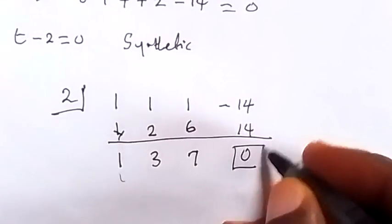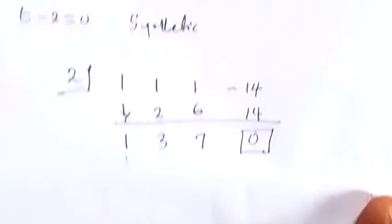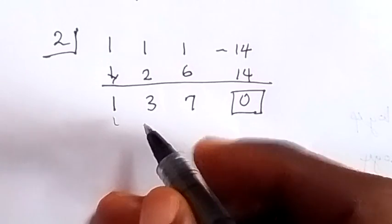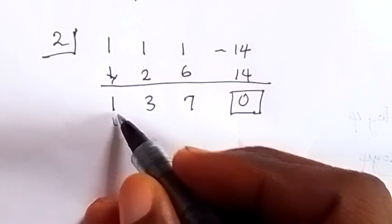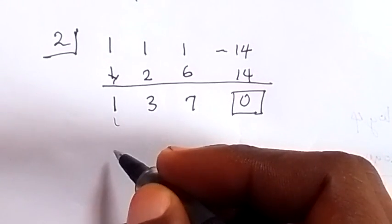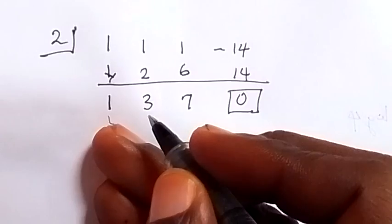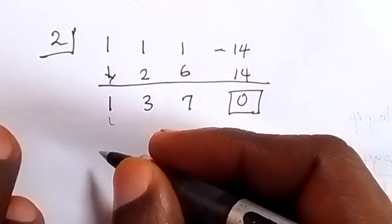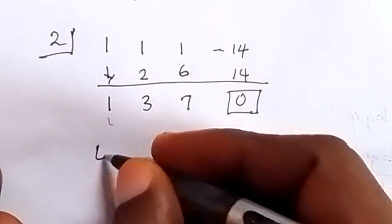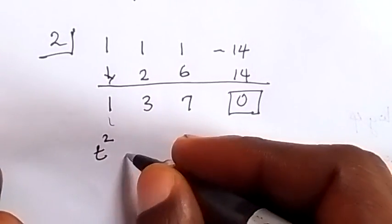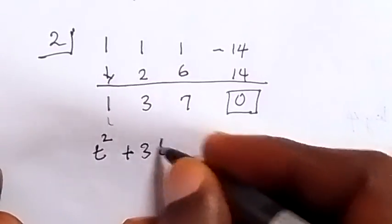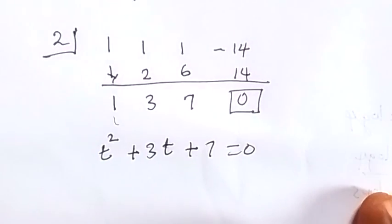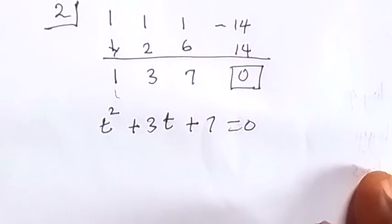This confirms that 2 is a root. The remaining coefficients 1, 3, 7 form the quadratic equation in t: t squared plus 3t plus 7 equals 0. So this is the quadratic equation remaining.